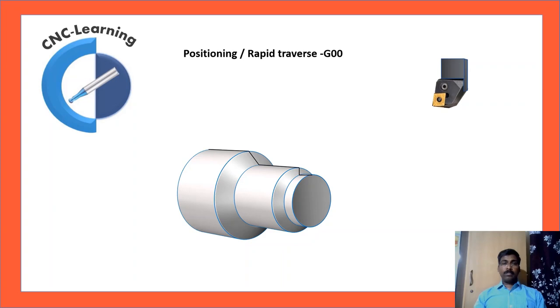G00, rapid traverse. This code is used for positioning. So the movement will be in air so that it has to be happening in rapid to save time.